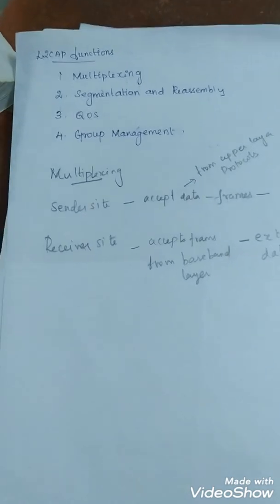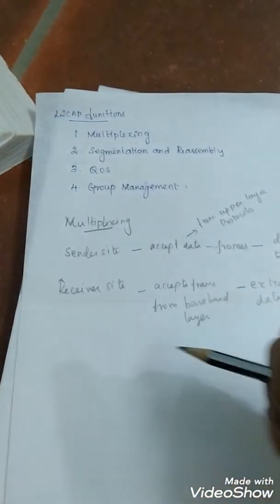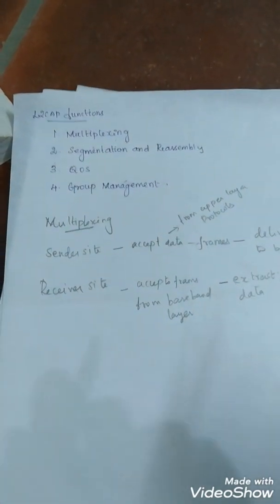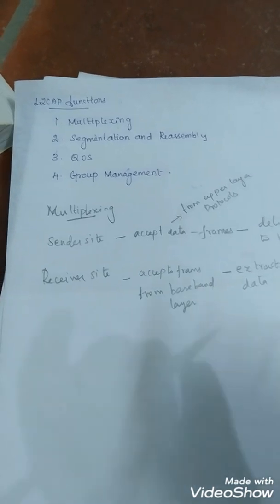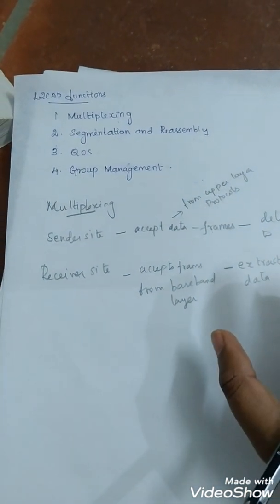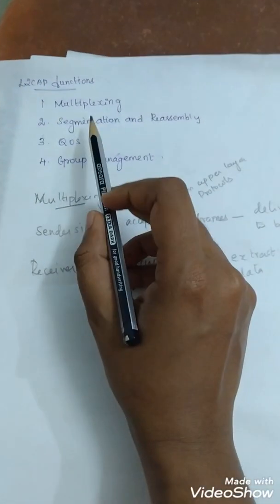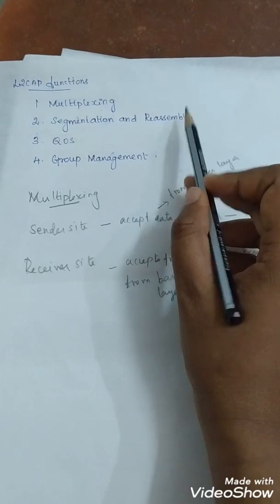Next one: segmentation and reassembly. In segmentation, large packets are segmented into small packets and information is added to define the location of the segments in the original packet. Segmentation is done at the source site and reassemble them at the destination.